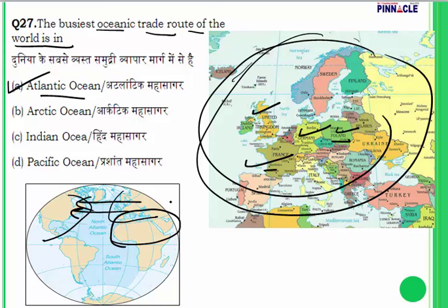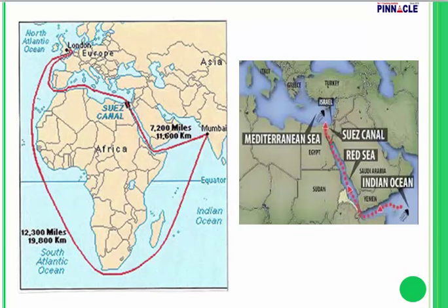The Pacific Ocean is the largest and deepest but not the busiest in terms of oceanic trade. The Indian Ocean is the only ocean named after a country. The Arctic Ocean is our smallest ocean but the biggest source of fresh water among all oceans. The Suez Canal, located in Egypt, connects the Mediterranean Sea and the Red Sea.